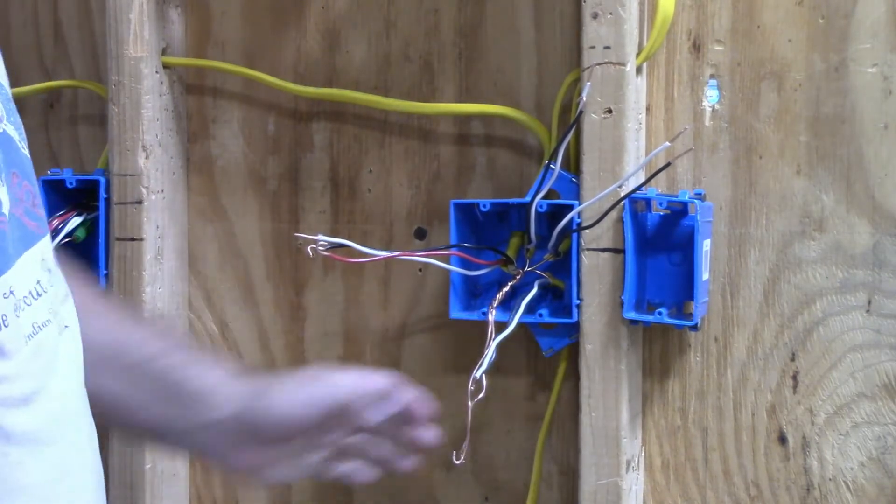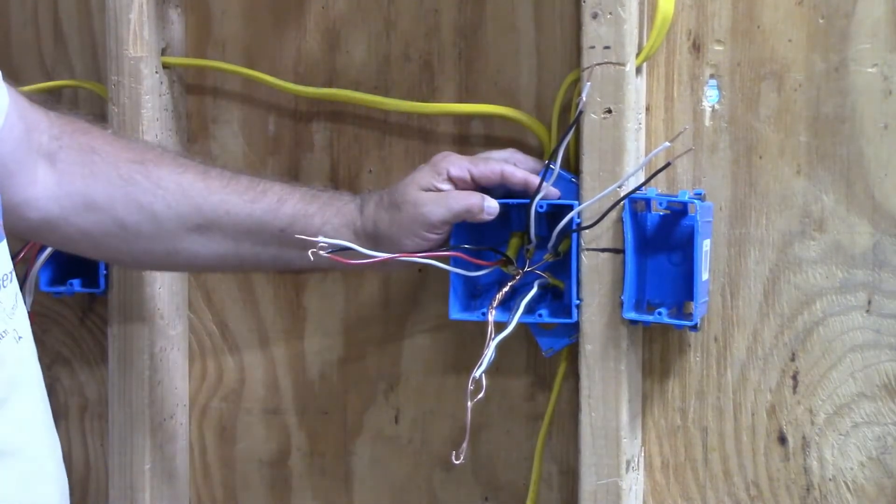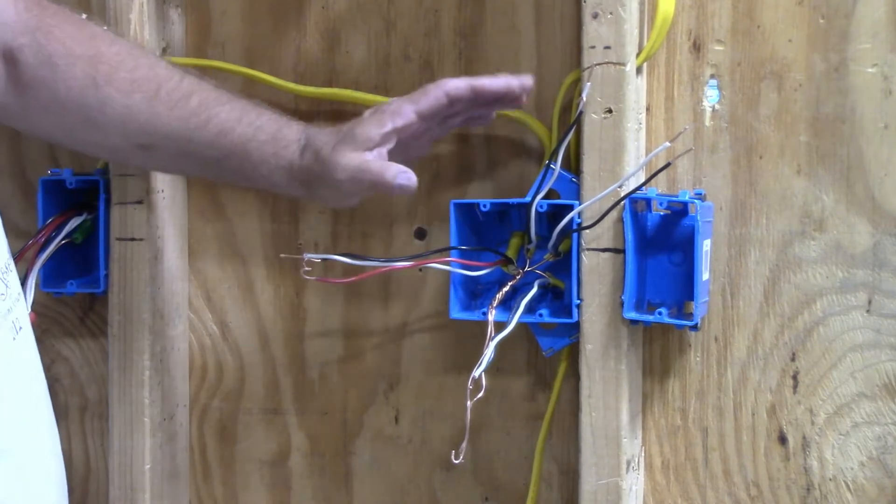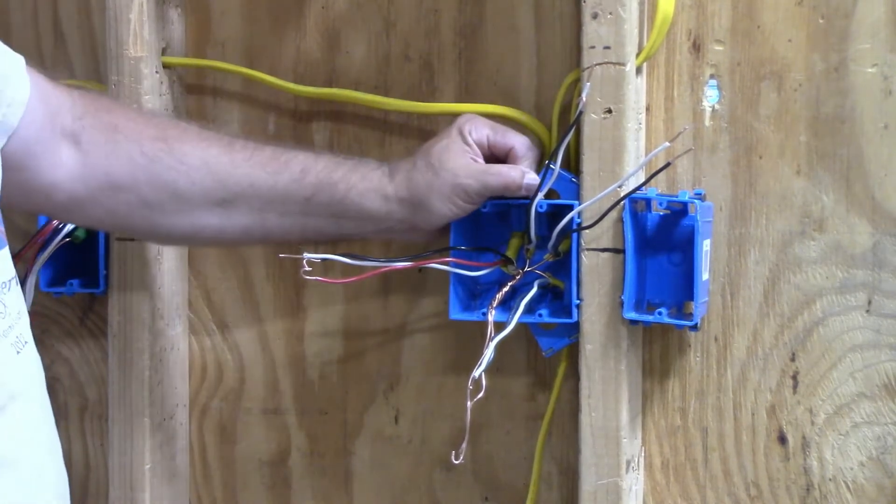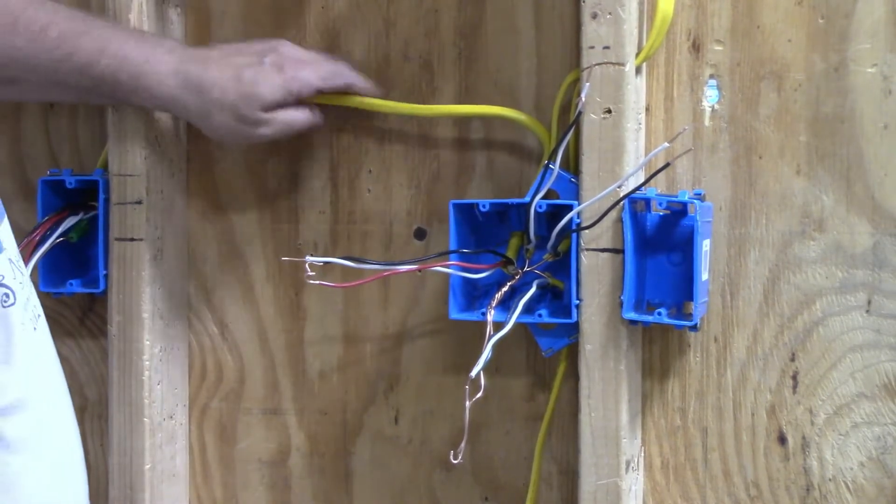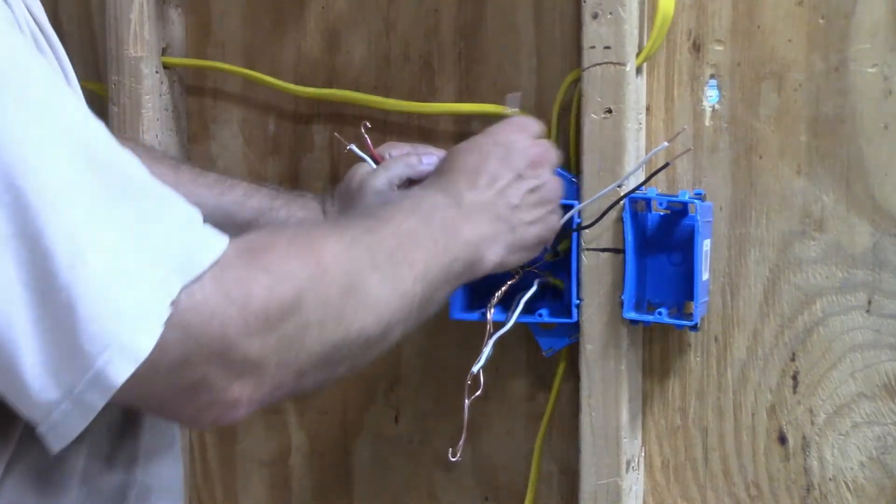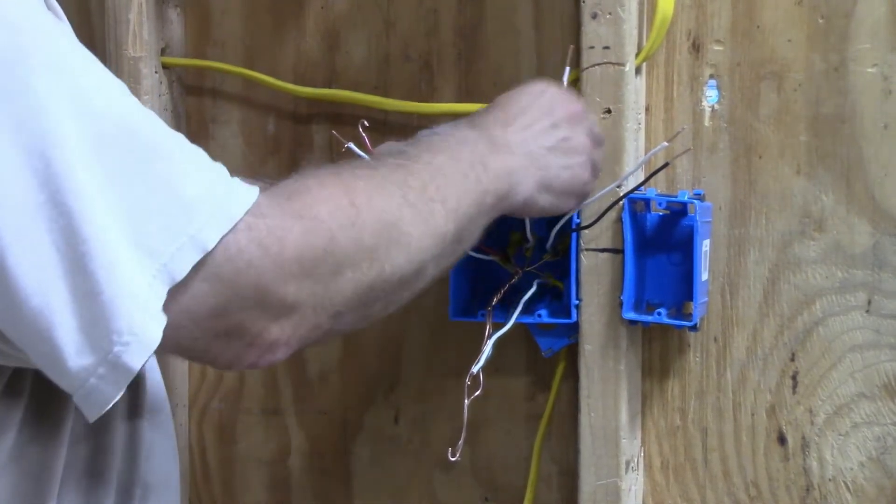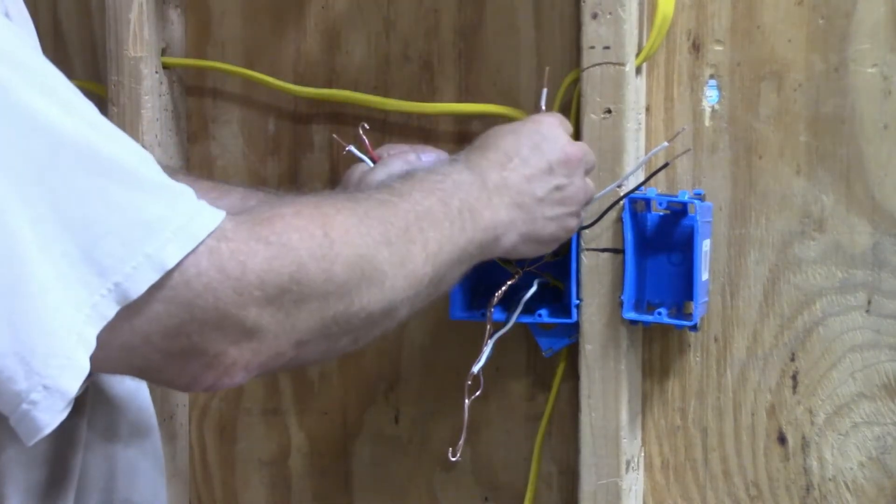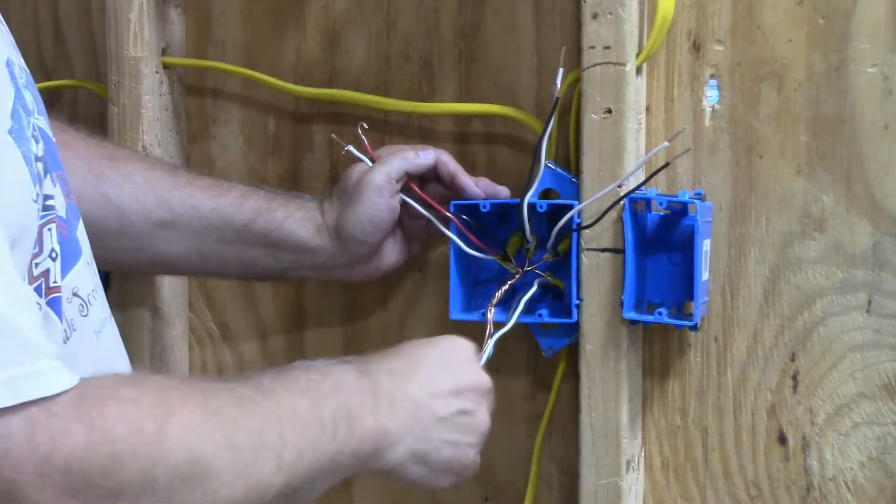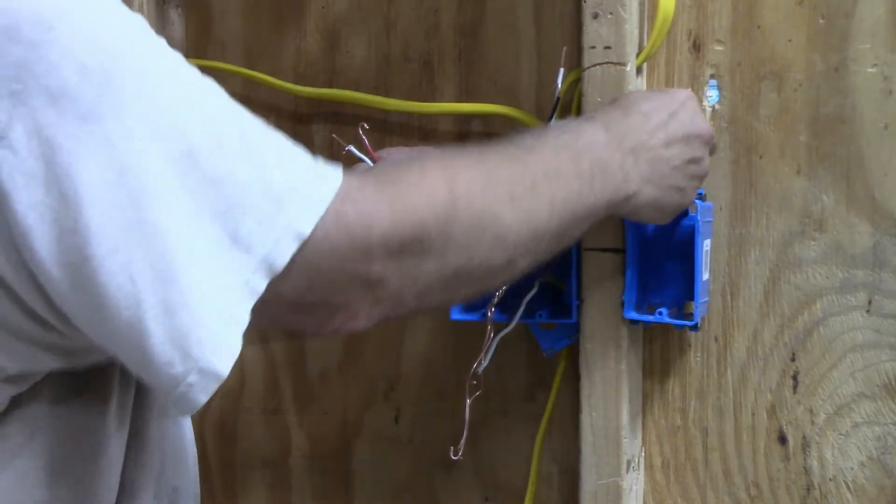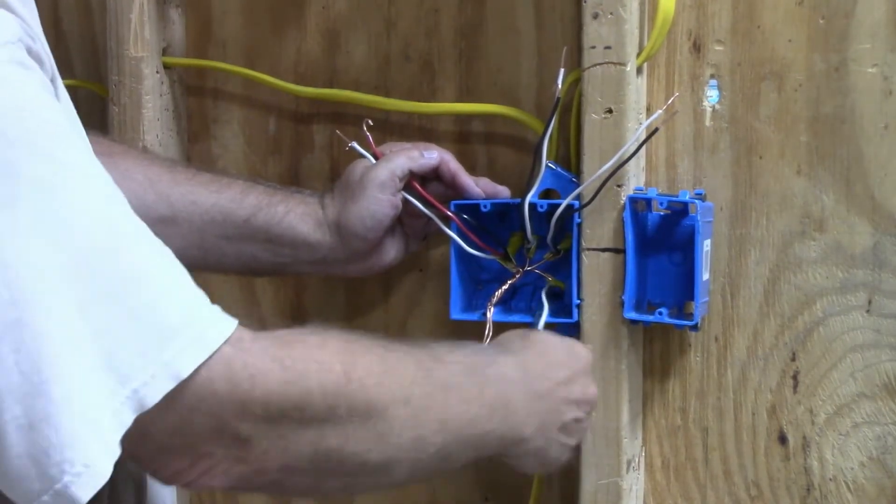In this video, I'm going to show you how to wire a two-gang box where there are two separate circuits. This three-wire coming in here will be on one circuit, and this switch leg going to this light will be on a separate circuit. I have a power coming in here, and I have a power coming in here.